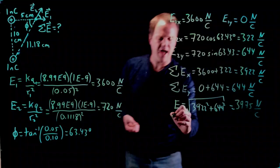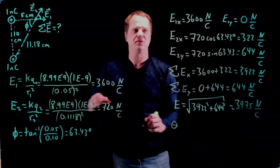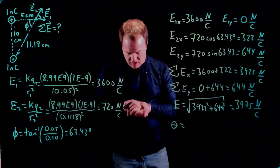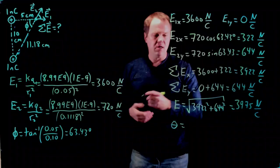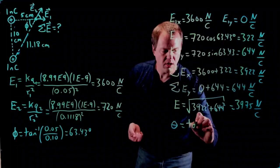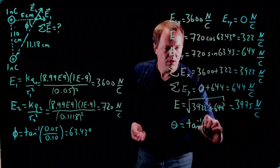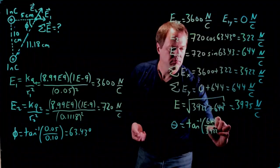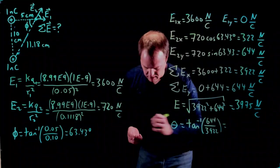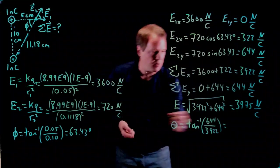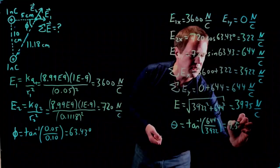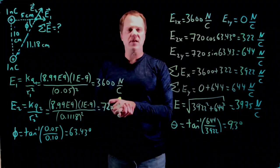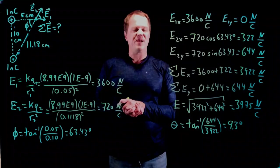And then if I want an angle, we'll call it theta, so as to distinguish it from this thing, which I called phi, the direction of this net electric field. I just take inverse tangent of the y component over the x component. And my calculator spits out 9.3 degrees. And that's the angle above horizontal. So that's the net electric field. Thanks for watching.